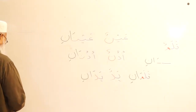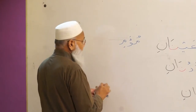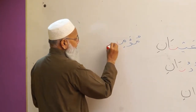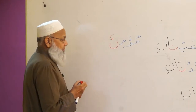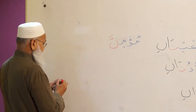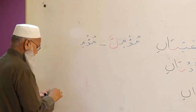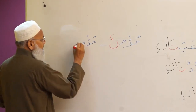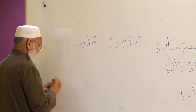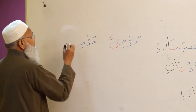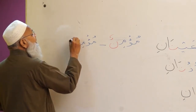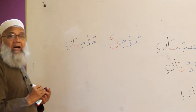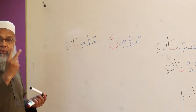Then some more complex words: mu'minun — a believer in the rafa form. Its musanna would be mu'minani — two believing men in the rafa form.